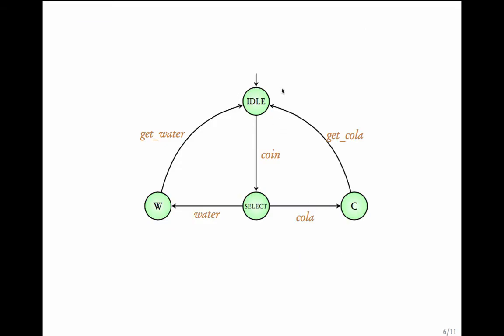Let us try to model the controller present inside such vending machines. As usual, when there is no use, the code is idle. When a coin is inserted, the code knows that it has to go into a phase where the user would select what he wants. Let us assume that there are only two kinds of beverages in the machine, either water or cola.